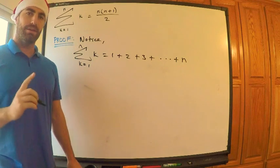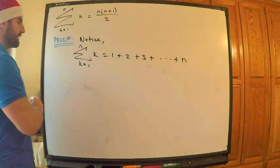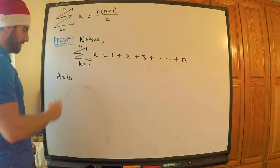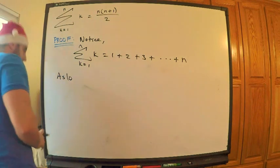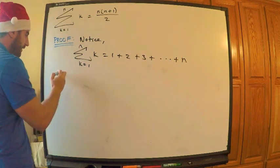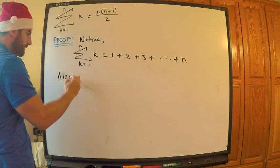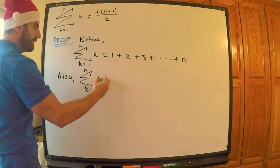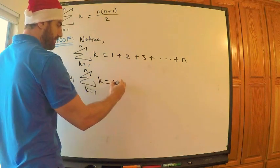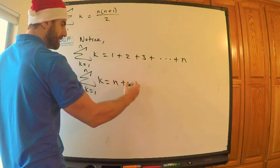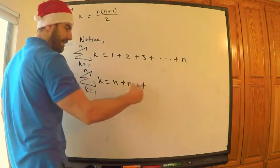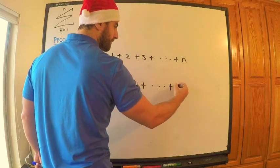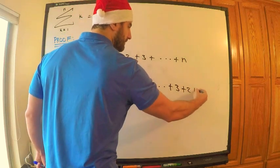But on the other hand, I can add these the other way. Also, the sum from k equals 1 to n of k, let's just add these the other way, is equal to n plus n minus 1, right, plus the next one would be n minus 2, et cetera, dot dot dot, plus 3 plus 2 plus 1.